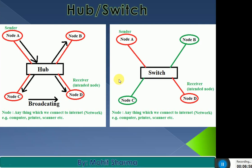Now let's see the difference between switch and hub with the help of a diagram. For the hub: node A is the sender and node D is the receiver. Node A sends data to the hub, and the hub broadcasts that data to nodes B, C, and D. Nodes B and C reject it, but D accepts it — this is called broadcasting. In the case of the switch, node A transmits data directly to node D only, not to B or C. That's why a switch is called an intelligent hub. A node can be any device connected to the network — a computer, printer, scanner, etc.